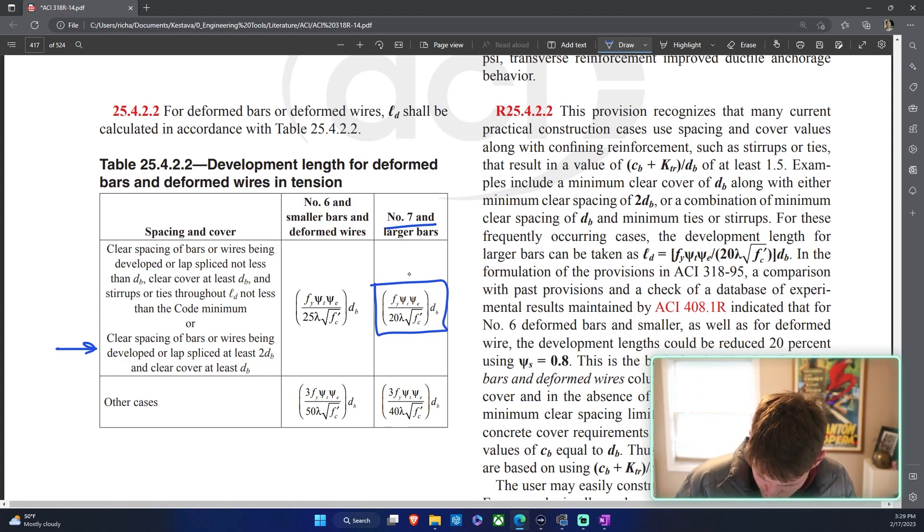We have a number eight bar, that means we're using this equation. We still need to find, thanks to another subscriber Ryan, it's pronounced psi, so psi sub t and psi sub e need to be found. We know we have normal weight concrete from our previous unrolling of this problem, so lambda is just 1.0. And then f prime c I believe we defined as 4 ksi, but we'll confirm that when we go back. Diameter bar we already know as well. So fy is 60 ksi, standard for reinforcement.